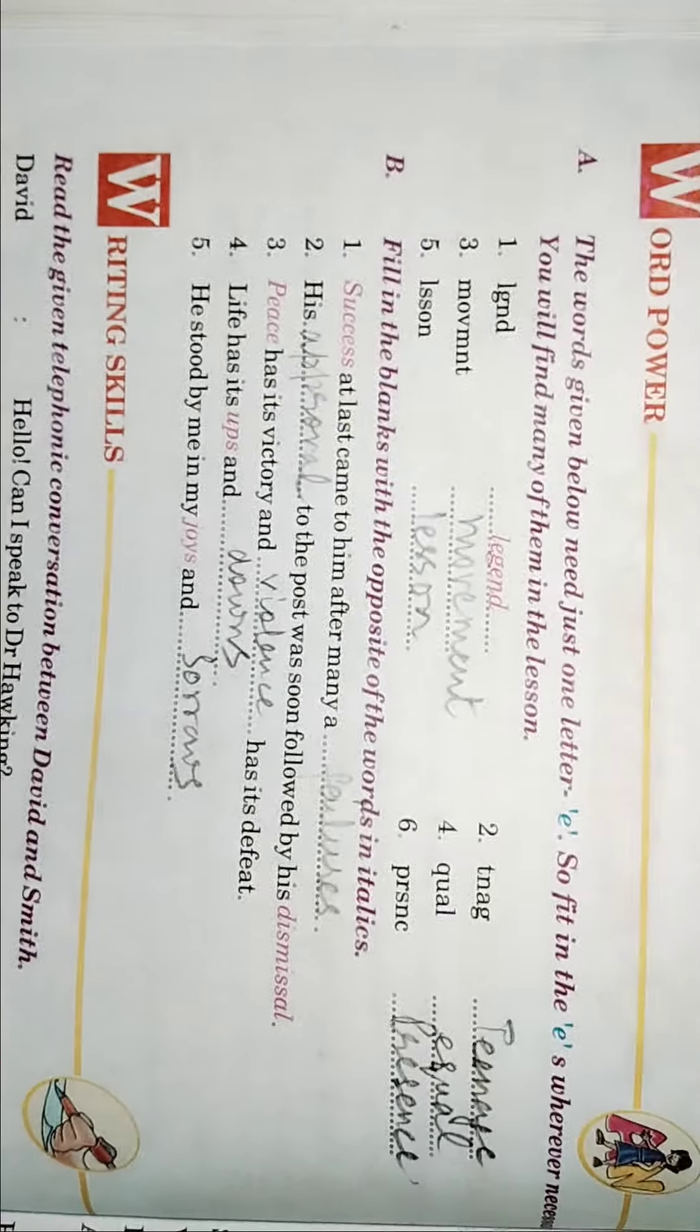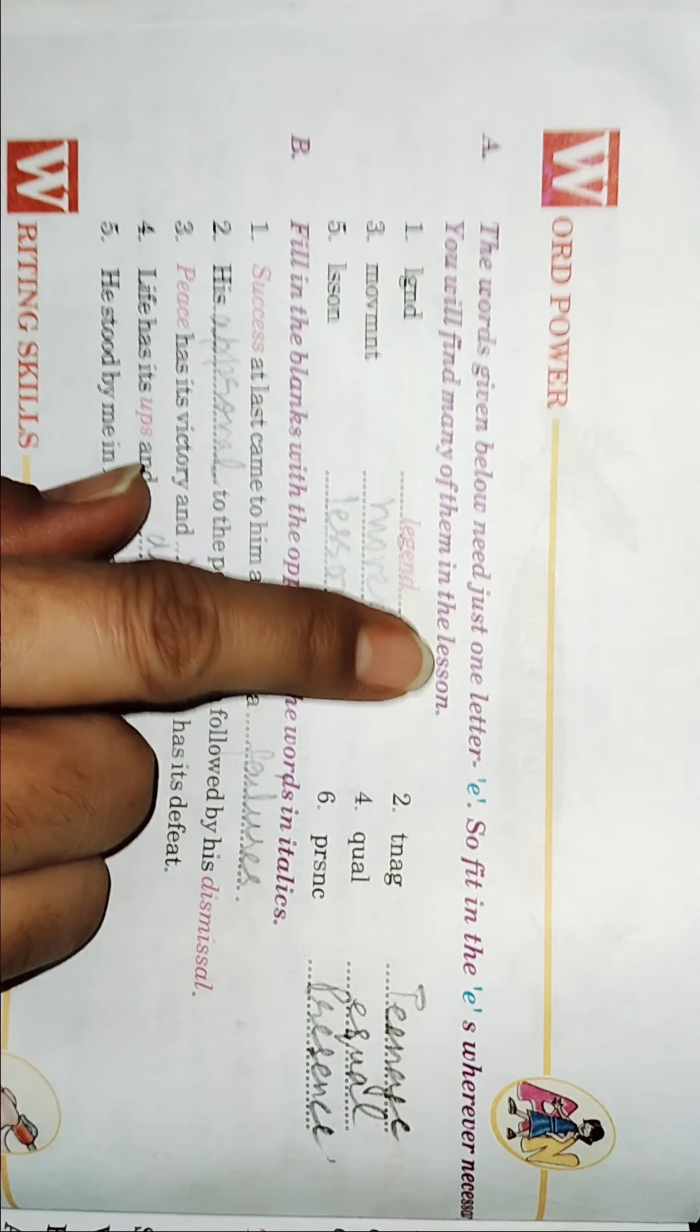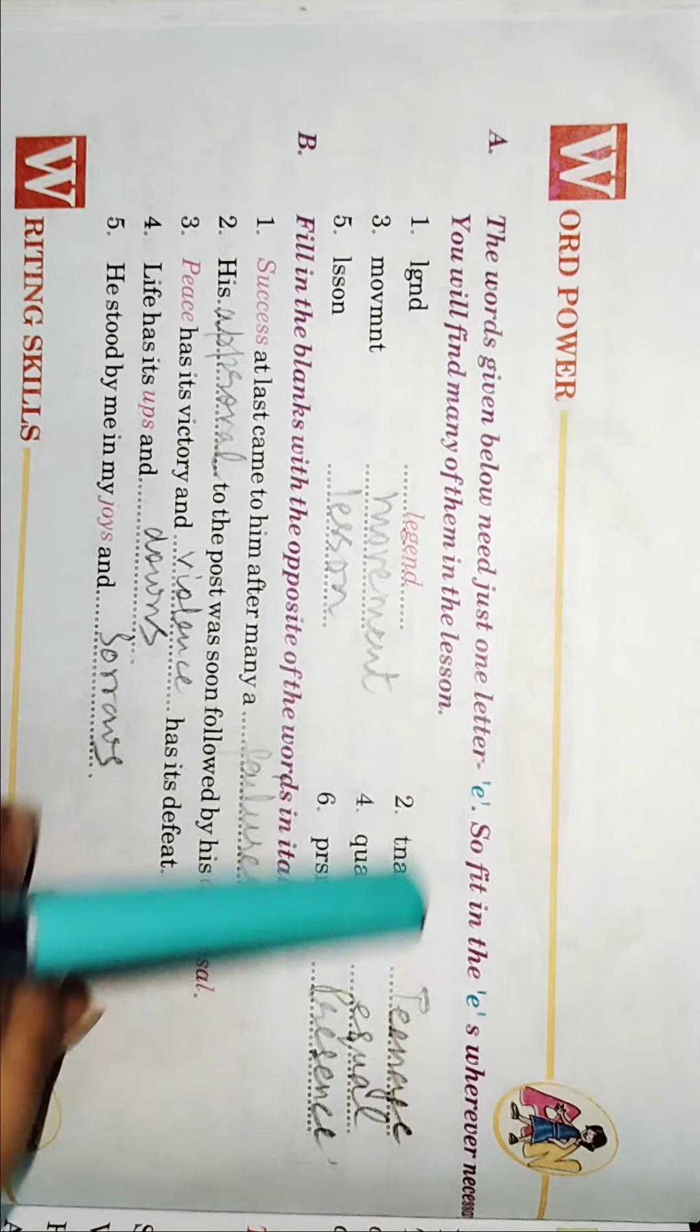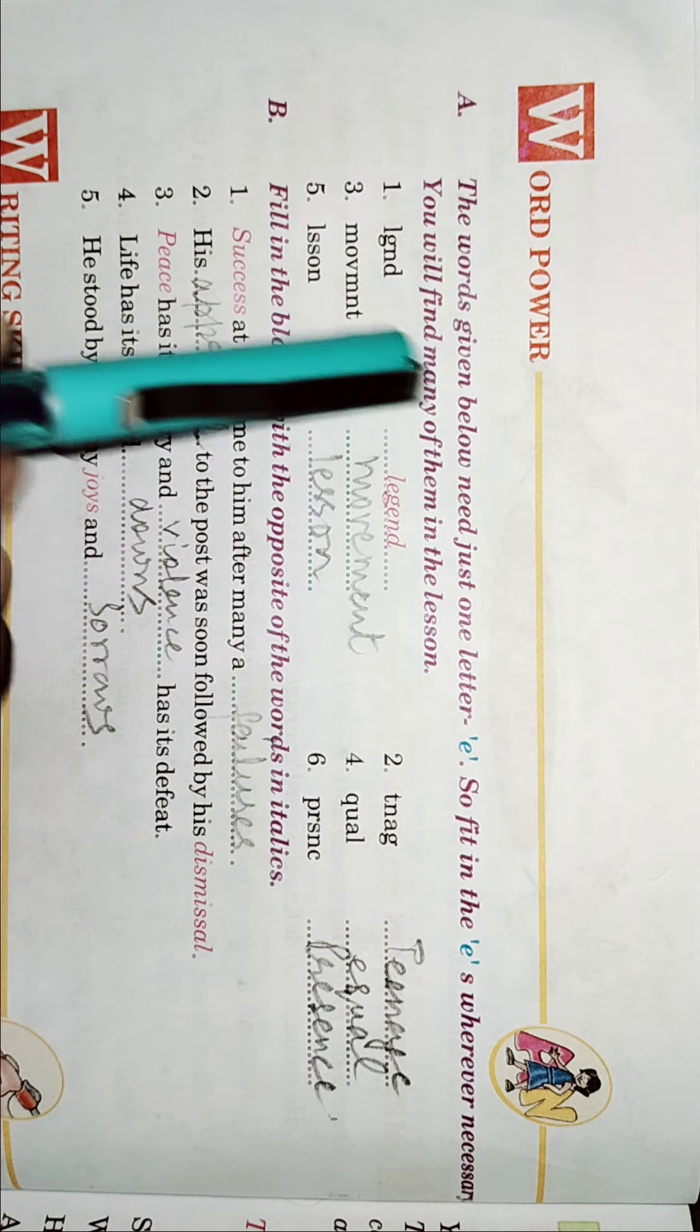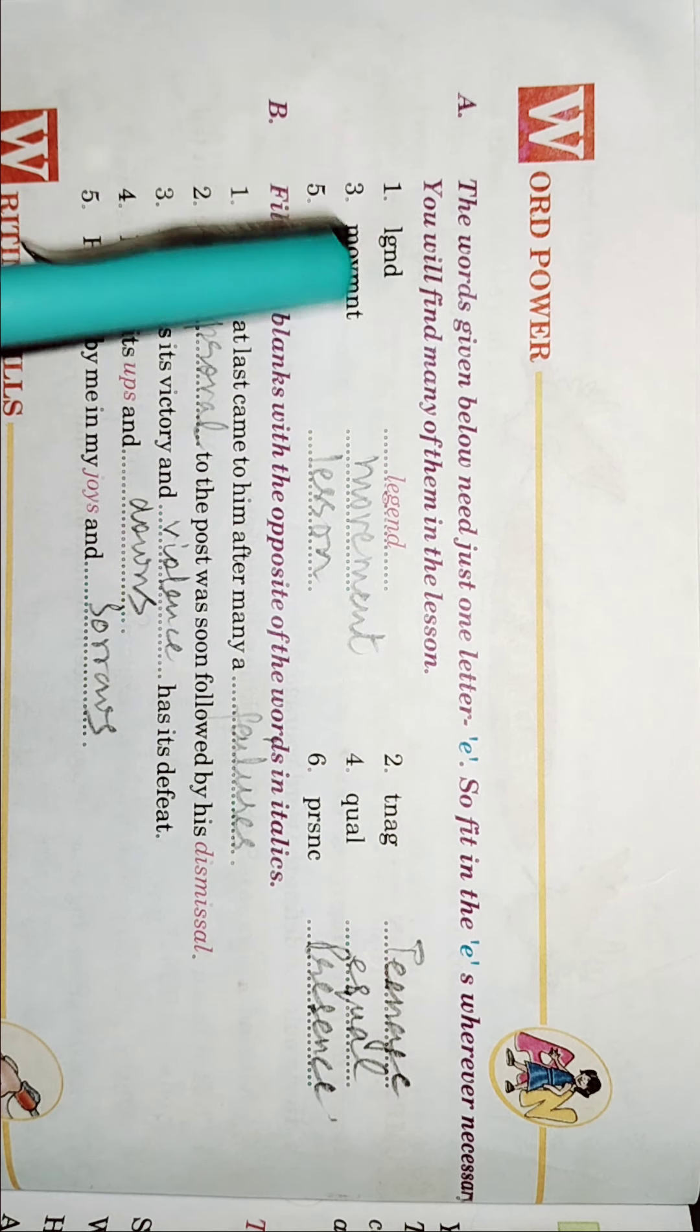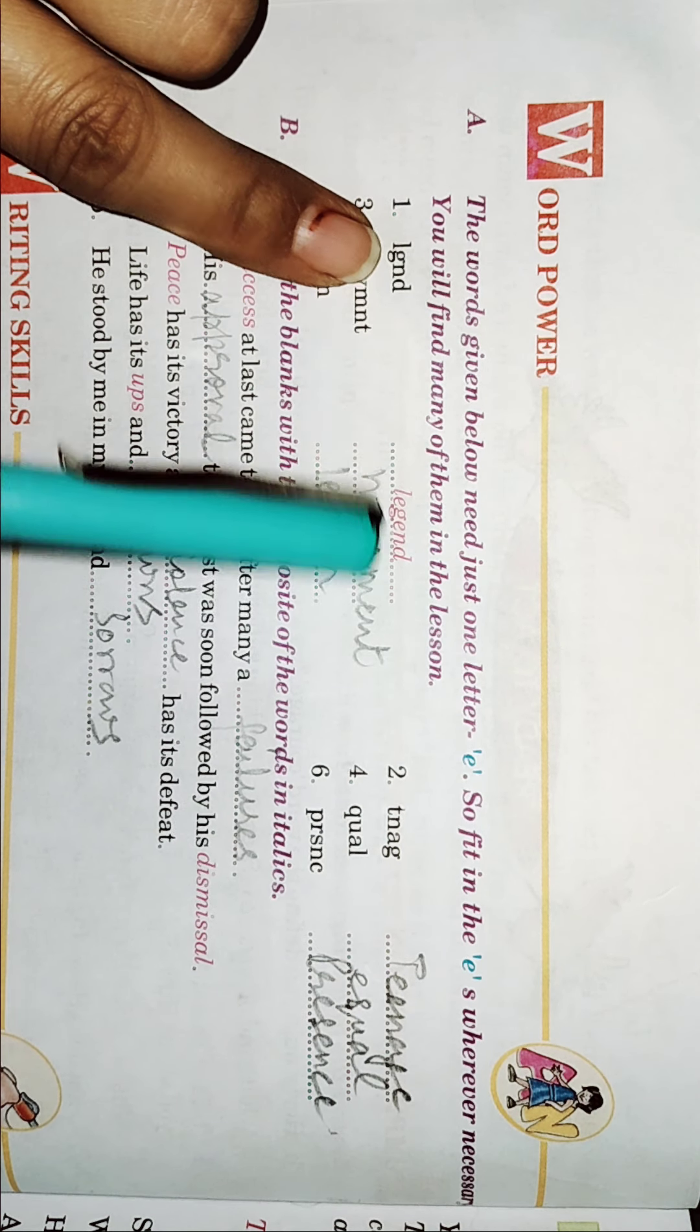Then, come to the next page number 58. Word bar. The word given below need just one letter. E. So, fit in E. So, fit in E's wherever necessary. You will find many of them in the lesson. Legend. Like here, they have added two E's here and it has become legend.